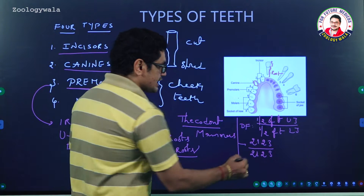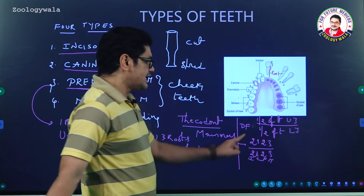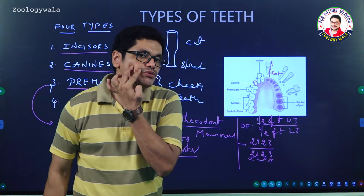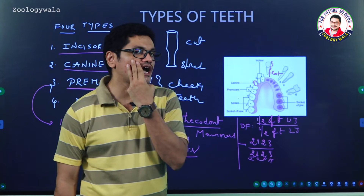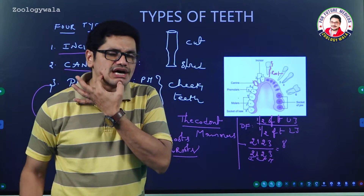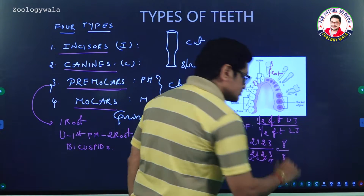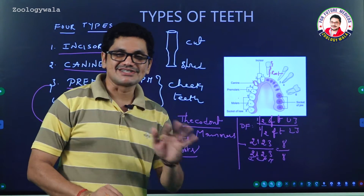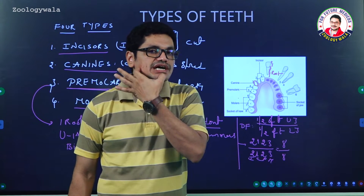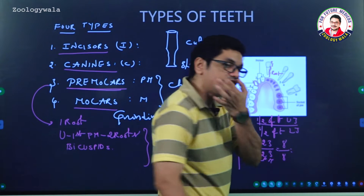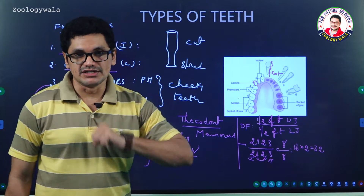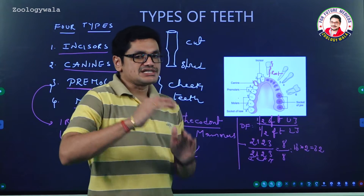In this formula: two incisors, one canine, two premolars, and three molars are present in the upper jaw. That gives 2+1+2+3 = 8 teeth in half of the upper jaw, and similarly 8 in half of the lower jaw. So the upper jaw contains 16 teeth and lower jaw 16 teeth, giving a total of 32 teeth in adults.